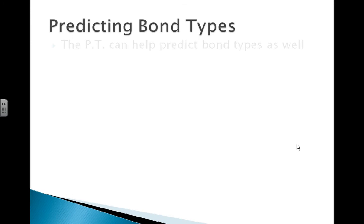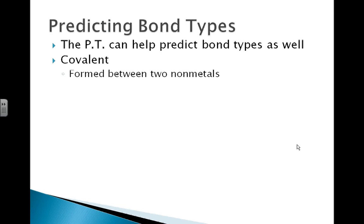We can also predict bond types using the periodic table. Covalent bonds, remember those very strong bonds that create molecules, are formed between two non-metals. Ionic bonds, on the other hand, again those weak ones that are simply an electrostatic attraction, are formed between a non-metal and a metal.